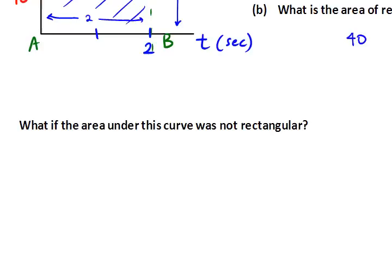So again, what if the area under this curve was not rectangular? In other words, what if our velocity function was something such that the area under the curve gave us some irregular area? You'd still have the area under the curve equaling the amount of distance traveled over this particular time interval.